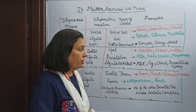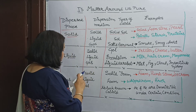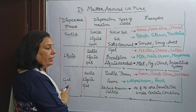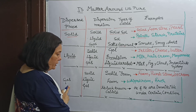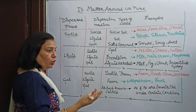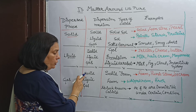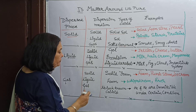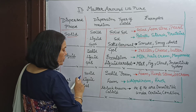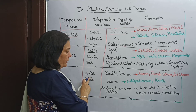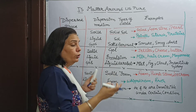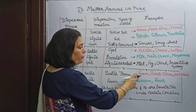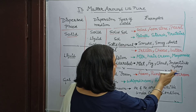Next, the last category is when the dispersed phase is in gaseous state. We have three combinations: gas in solid, gas in liquid, and gas in gas. When gas dissolves in solid, it is called solid foam. Examples are foam, pumice stone, and ice cream. Yes — ice cream is a colloidal solution, specifically a solid foam.